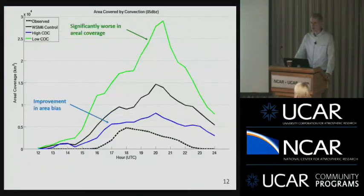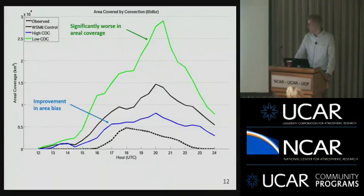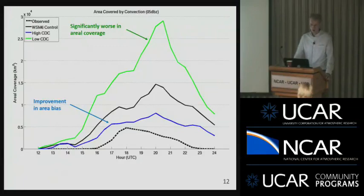Looking at how much area changed across that day — aerial coverage on the y-axis versus time on the x-axis — the control already over-forecasted area pretty significantly. But by lowering the CDC to 100, the area was almost six times greater than what was observed. In contrast, when you raised the cloud droplet concentration to observed values, it did improve the area bias — but still over-doing the area. That's a very high sensitivity.